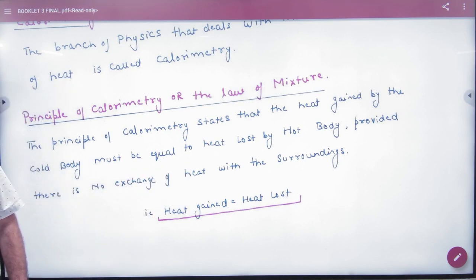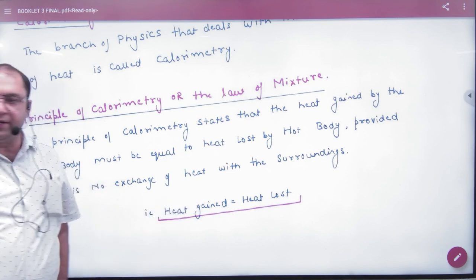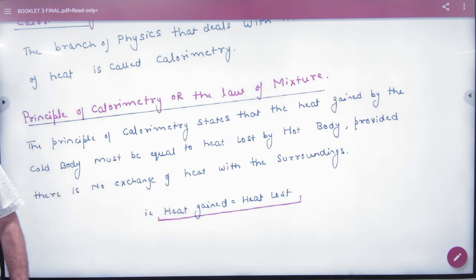So in the surrounding area, there is no exchange of heat with the surroundings. So in this case, heat gained is equal to heat lost. So this is the principle of calorimetry.